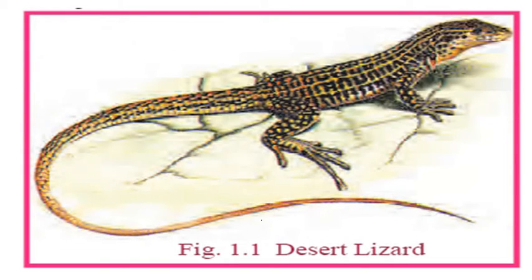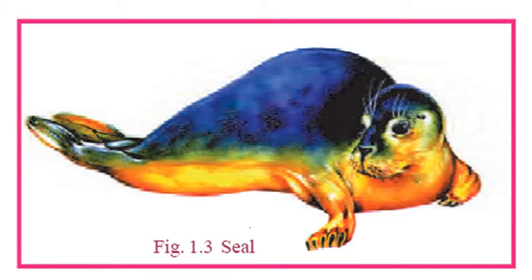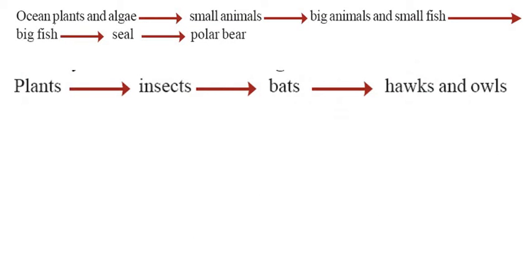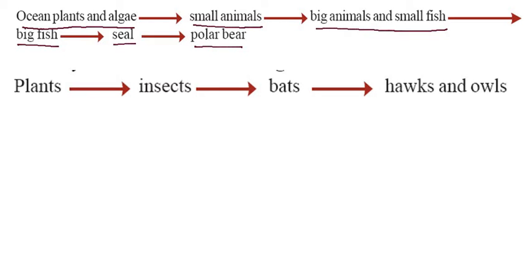There is a lizard which is found in the desert, so it is called a desert lizard. There is also the seal. Now, this is a food chain — ocean plants and algae are eaten by small animals, small animals are eaten by big animals and small fishes, big fishes are also eaten by the seal, and the seal is eaten by the polar bear.